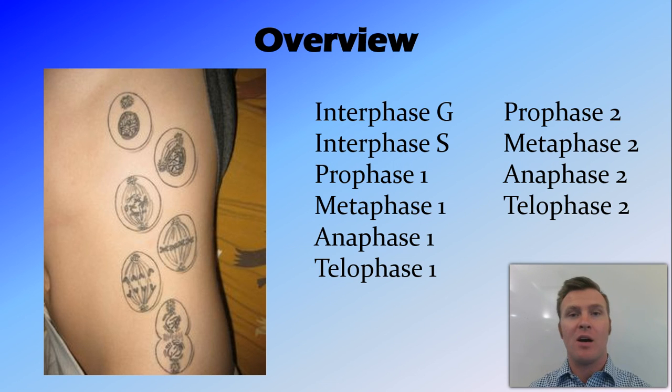Meiosis. Two stages of meiosis. Meiosis 1, meiosis 2. Two cell divisions. Only one DNA replication. Resulting in non-identical haploid daughter cells. Peace out, guys.